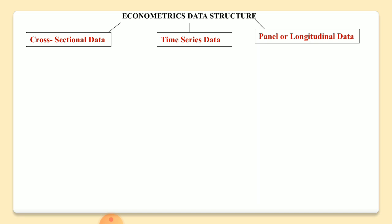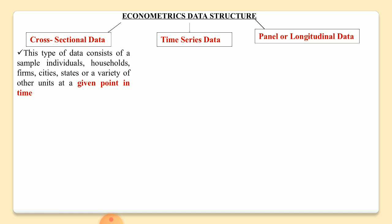The first one is cross-sectional data. Cross-sectional data are widely used in economics and other social sciences, and even in finance. This type of data consists of a sample of individuals — it means when we collect data from individuals, households, firms, cities, states, or a variety of other units at a given point of time. This is a very important point: at one particular point of time.